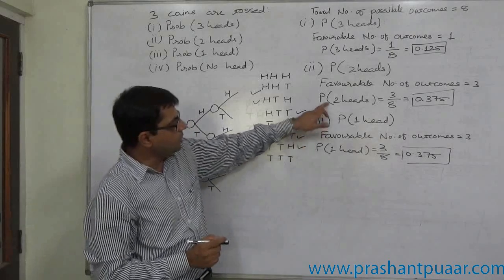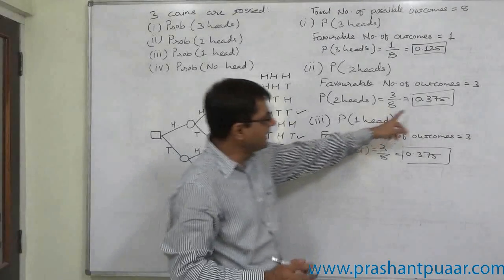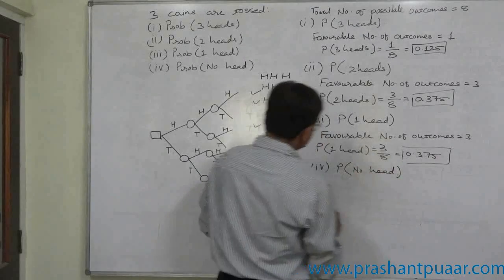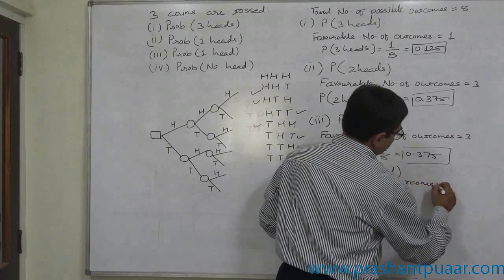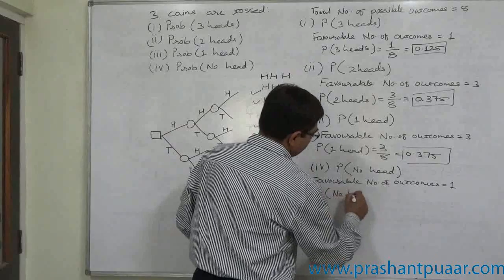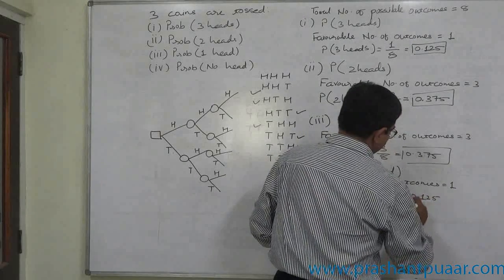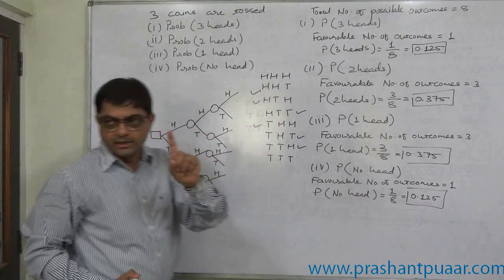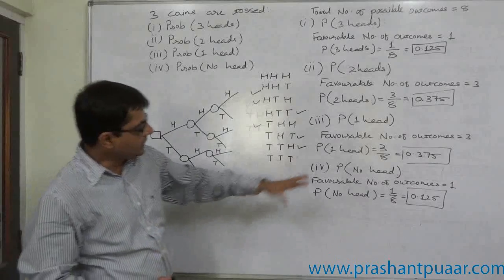The probability of getting two heads or one head is an equally likely event — the probability of these two events is exactly the same: 3/8 or 0.375. The last case: probability of no head — favorable cases is 1 only. No head means tail on all three coins. Probability of no head equals 1/8, that is 0.125. Again, the sum of these values is 1, meaning these four possible cases are mutually exclusive and exhaustive — no other fifth case is possible.